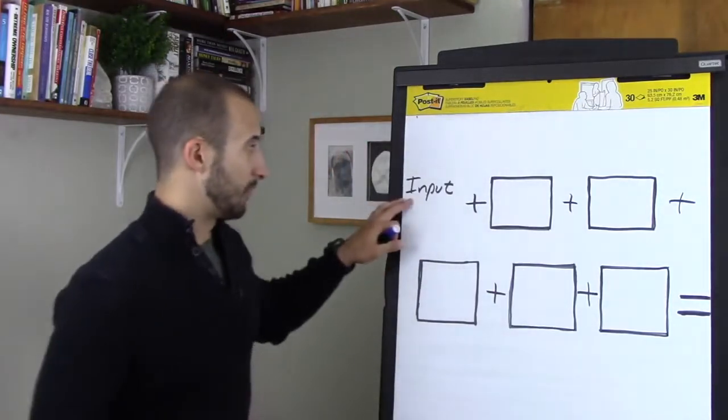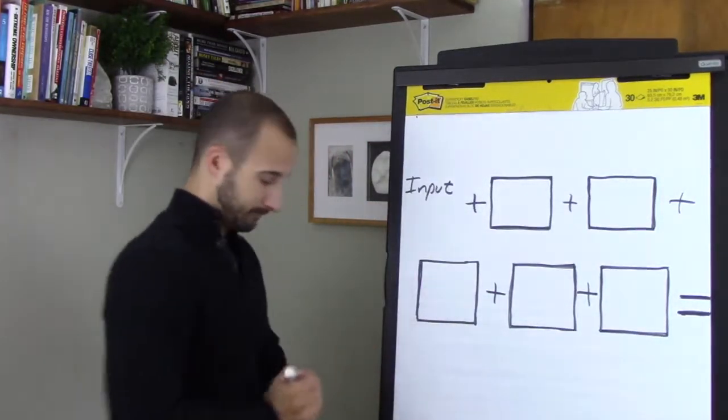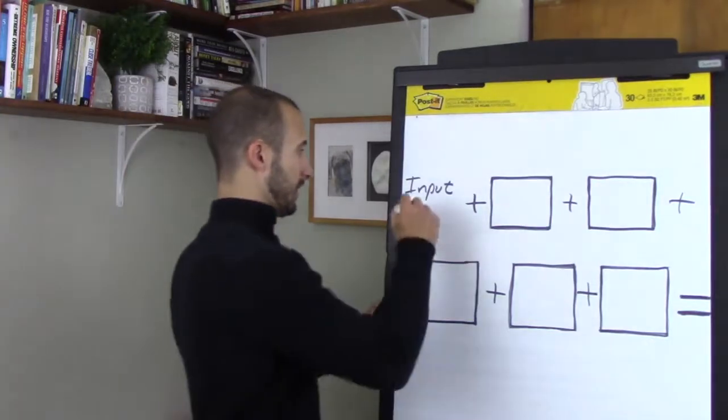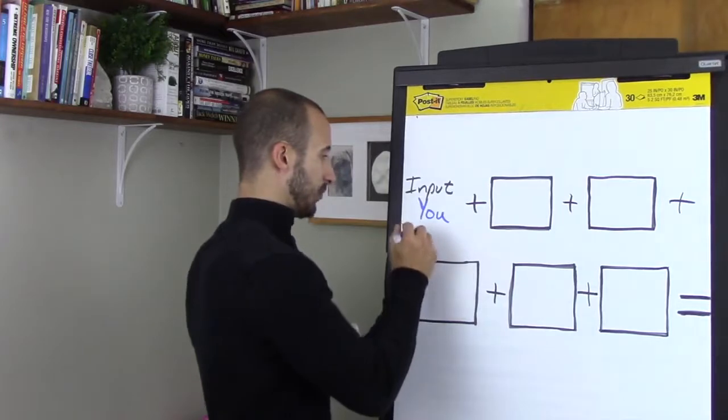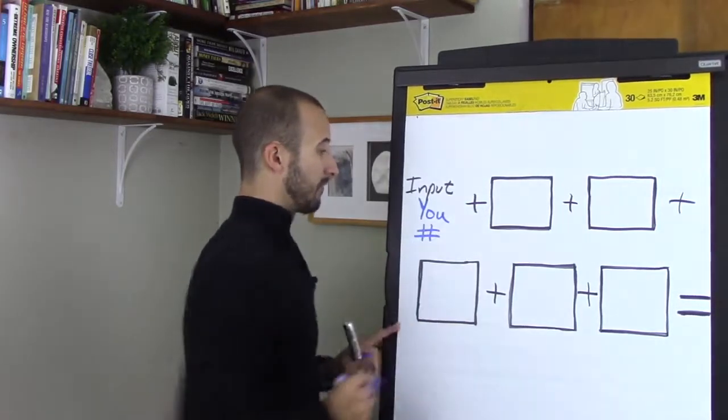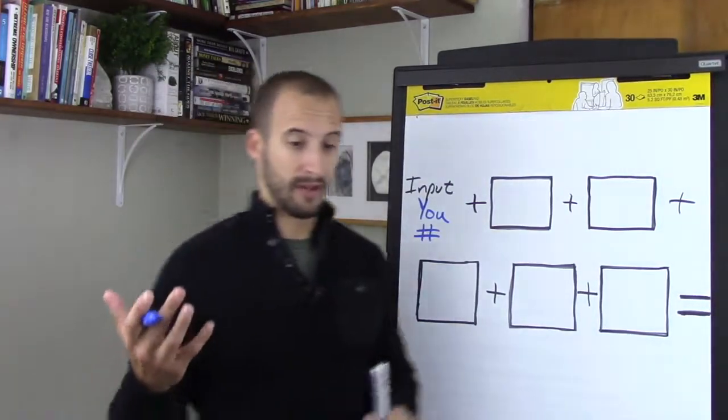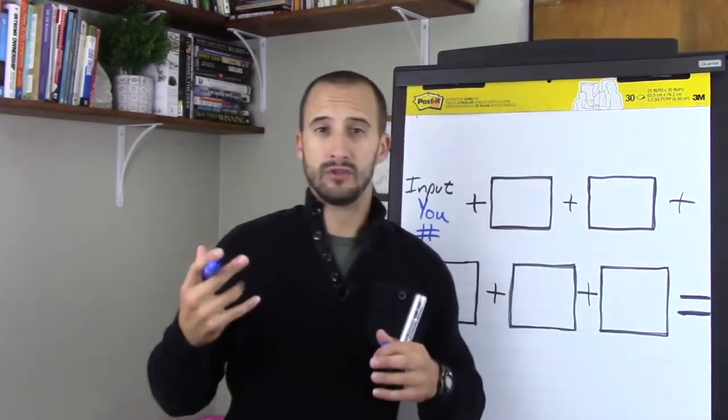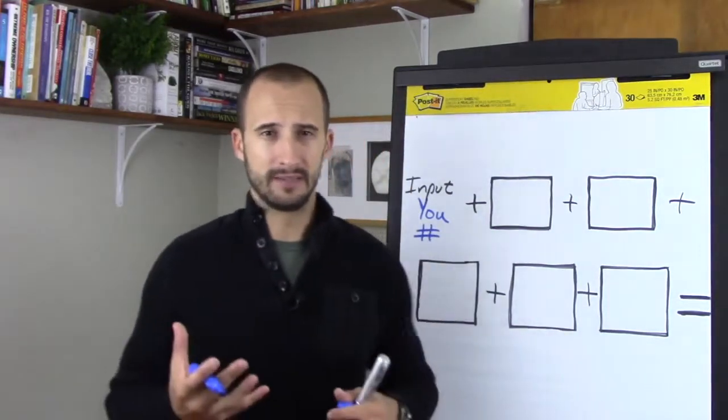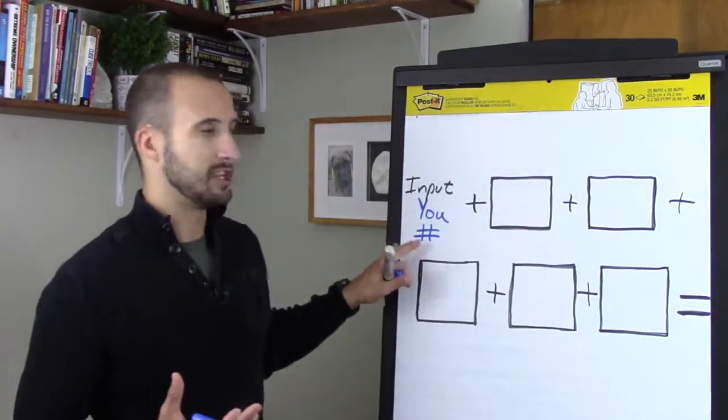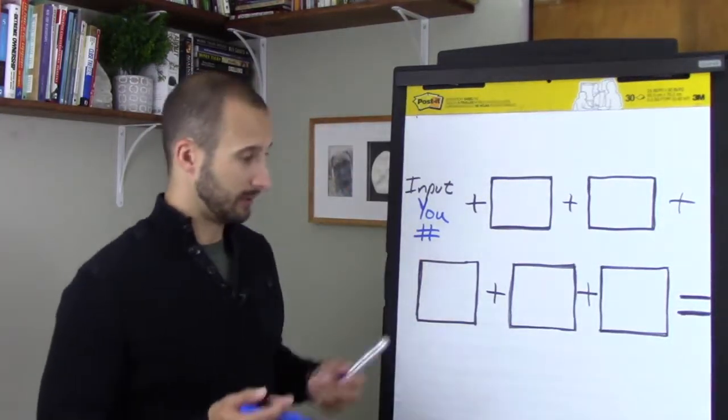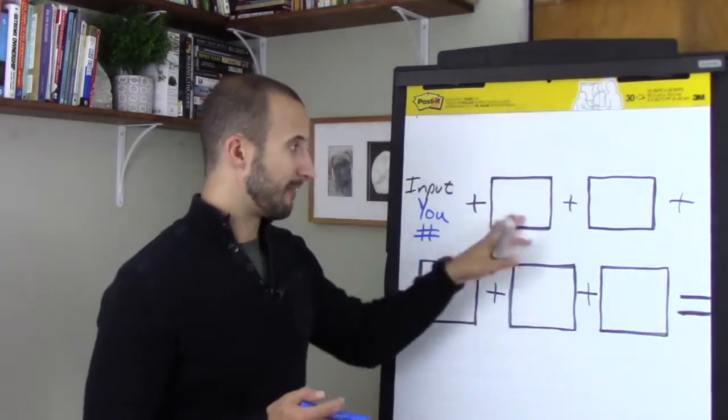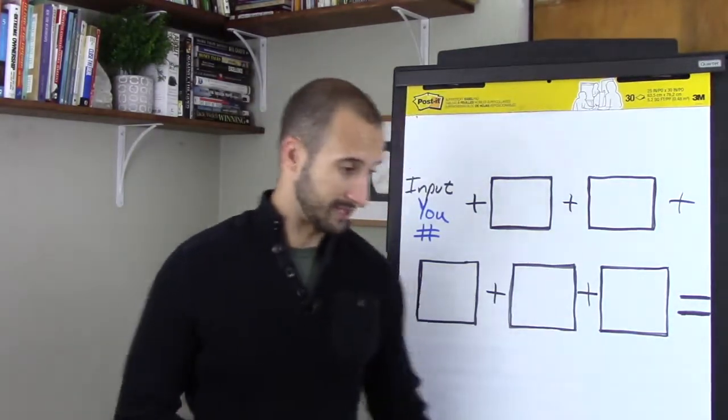As it relates to a pet business, the inputs that we have are basically two things. All we have is you, who you are as a person, as well as the number of prospects, the number of views, the number of people, the leads, basically the number of people that see you in your business.